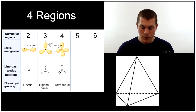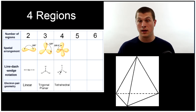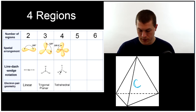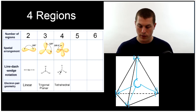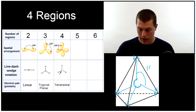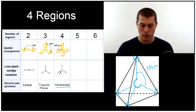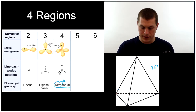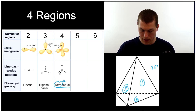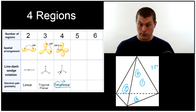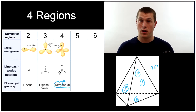With four regions of electron density, we get more interesting shapes — exactly like methane. A carbon in the center with a hydrogen at each vertex. The bond angle measures 109.5 degrees, which is the characteristic angle for molecules with four regions of electron density. We call this tetrahedral. Tetra means four, and if you look at the shape carefully, it has four sides — one, two, three on the bottom, four on the back. The central atom is in the center of a four-sided figure, hence tetrahedral.